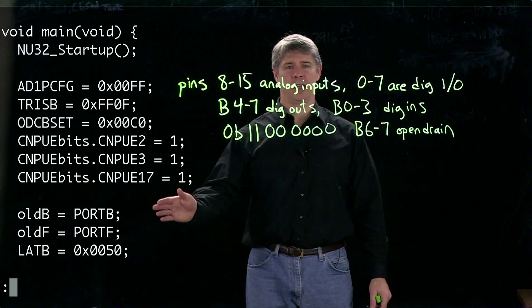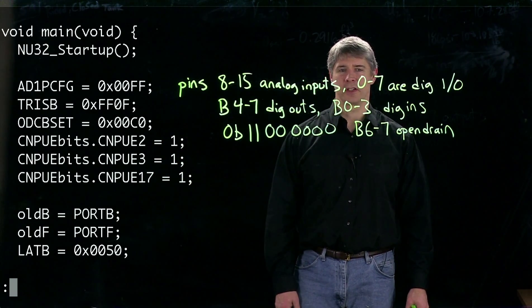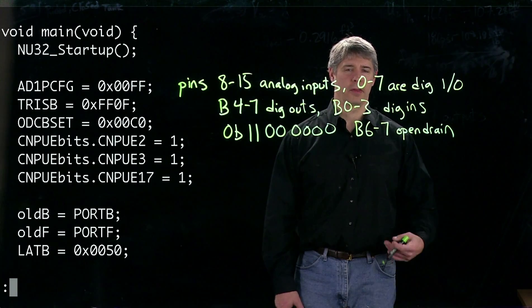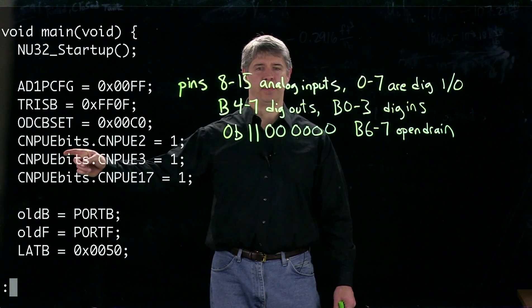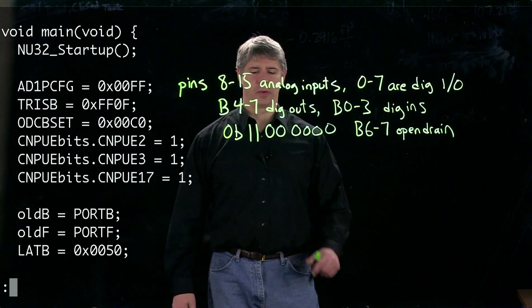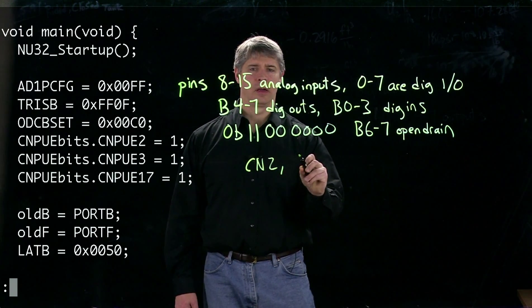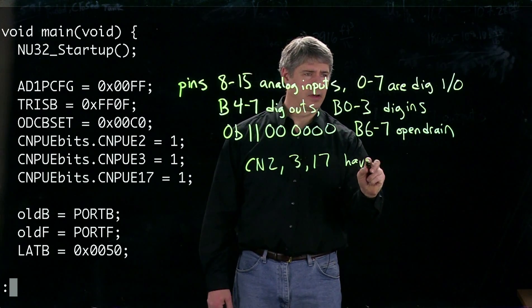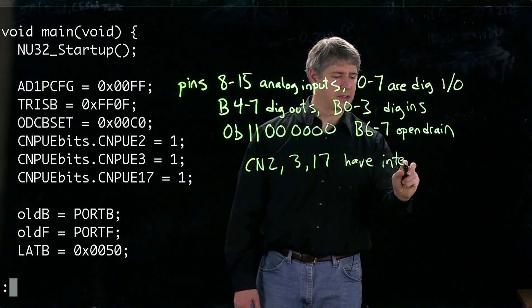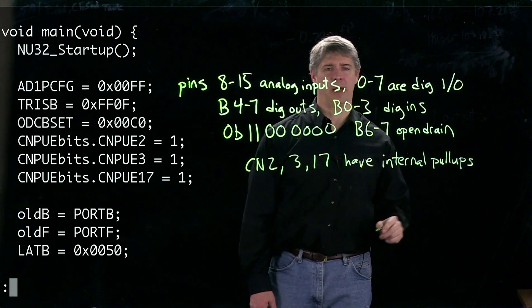These next three lines are setting up internal pull-up resistors for three of our pins. CN stands for change notification pull-up enable. We're setting CN2, 3, and 17 to have internal pull-ups.